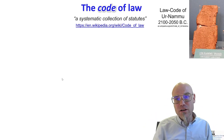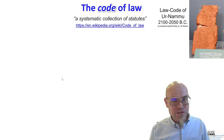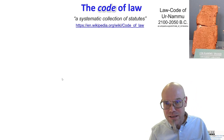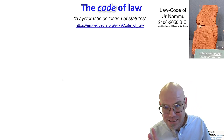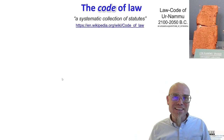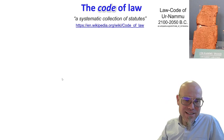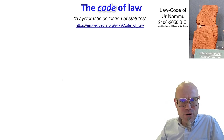And you can look at this code of law. One of the most important codes of law that you can never escape is taxes. As they say, only two things are certain in life: death and taxes. So that's a very important and one of the oldest laws.